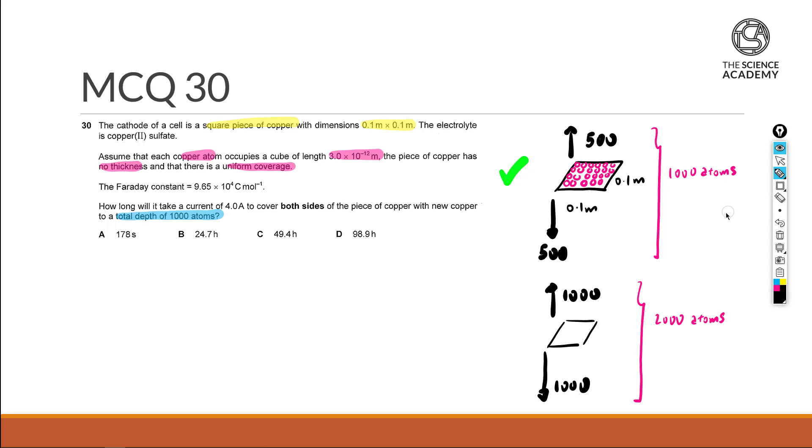So first thing first, we want to measure what is the area of square piece of copper. That will actually be 0.1 square meter squared. The reason here is I want to find out how many copper atoms is needed to fully cover one side of this square piece of copper. So the number of copper atoms required to cover square piece of copper for one layer.